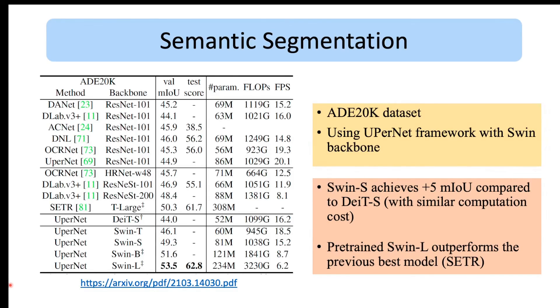And the final experiment is on semantic segmentation using ADE20K dataset, comparing ConvNet-based models and other transformer models using different methods. For Swin models they used UperNet framework and the results show that Swin-L model pre-trained on ImageNet-22K outperforms the previous best model SETR in both validation and test score.